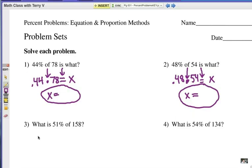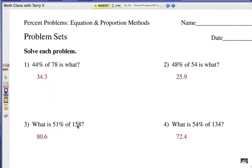Alright, number three. What is, so x equals 51%, change that to a decimal, .51. And then of, remember, is always multiplication, and 158. So we've got .51 times 158. Number four. What is 54% of 134? Multiply that out. Make sure your decimal is in the right place: 80.6 and 72.4. Now those four problems are all done the same way. Let's look at some other examples.